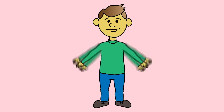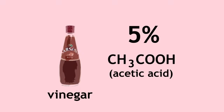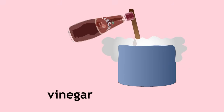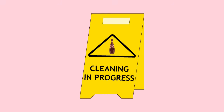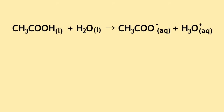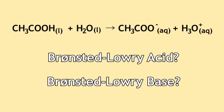Let's do a quick warm-up. Vinegar is a 5% aqueous solution of acetic acid. Vinegar is used in cooking worldwide and is sometimes used as a cleaning agent. From the equation, which describes the behavior of acetic acid in water, could you identify the Bronsted-Lowry acid and the Bronsted-Lowry base?